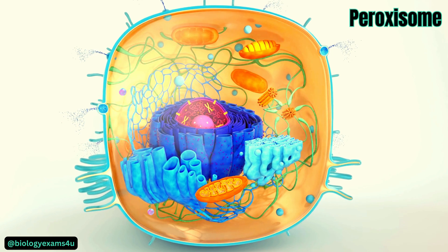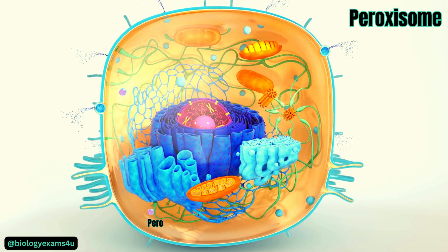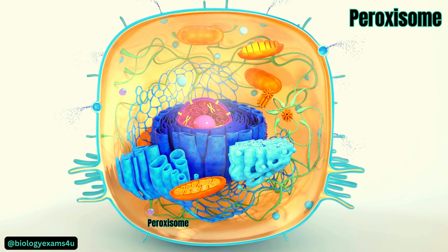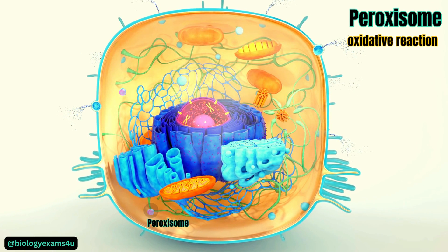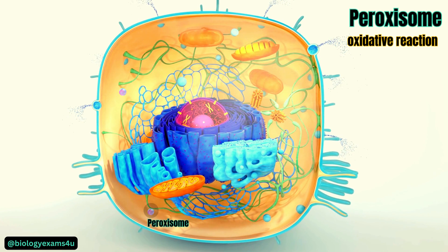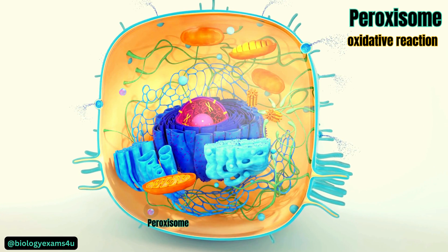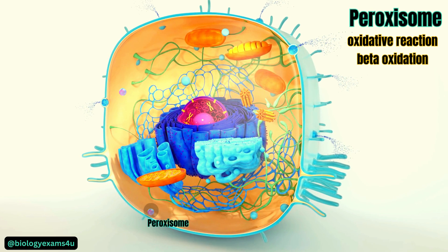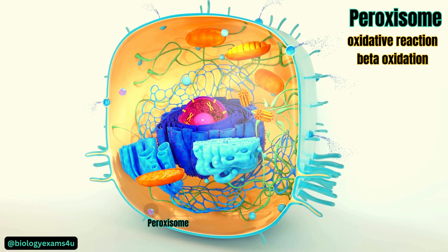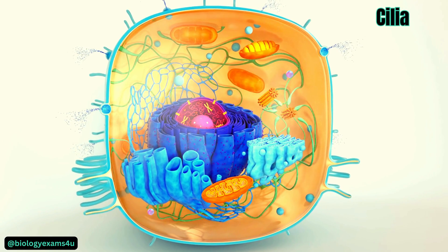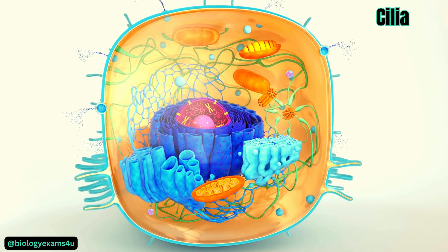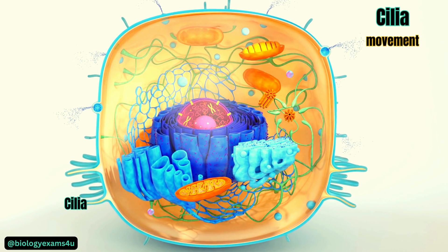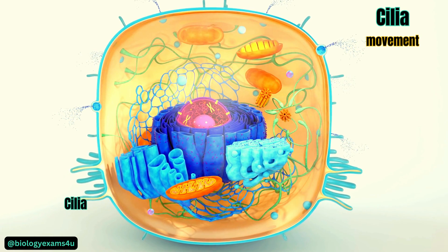There is one more organelle similar to lysosomes but with a specific function — peroxisomes. They are small membrane-bound organelles containing oxidative enzymes such as catalase and uric acid oxidase, involved in the breakdown of harmful hydrogen peroxide produced in the cell into water and oxygen. Peroxisomes are also involved in the breakdown of fatty acid molecules through beta-oxidation. In multicellular animal cells, cilia are present on the cell surface and function to move cells, groups of cells, or to help transport fluid or materials past them.